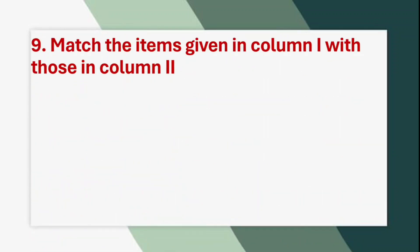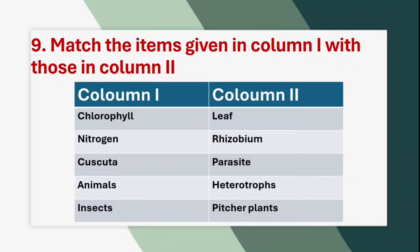Ninth question: Match the items given in column 1 with those in column 2. Here are the matched answers: Chlorophyll → Leaf; Nitrogen → Rhizobium; Cuscuta → Parasite; Animals → Heterotrophs; Insects → Pitcher plant.